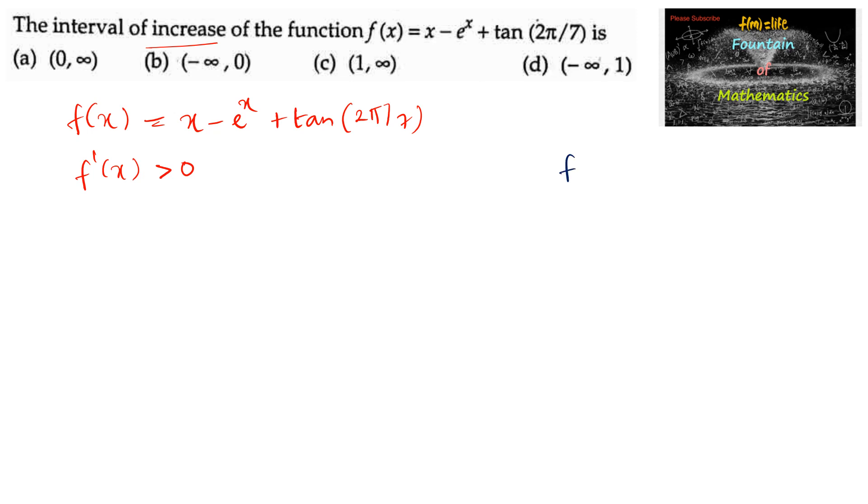Let us find f'(x). Since f(x) = x - e^x + tan(2π/7), we find f'(x) by differentiating with respect to x. The derivative of x is 1, minus the derivative of e^x which is e^x, and the derivative of tan(2π/7) is 0 since it's constant. So f'(x) = 1 - e^x.